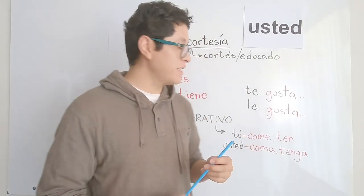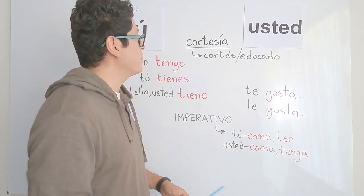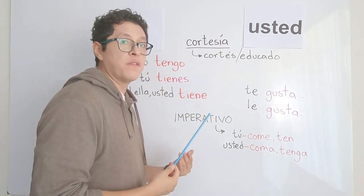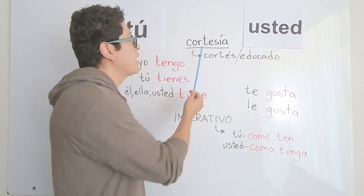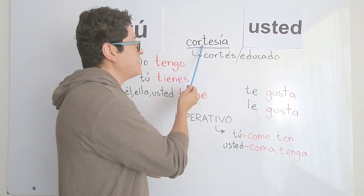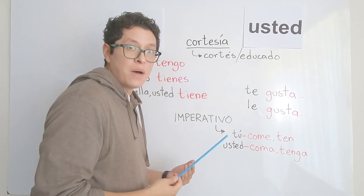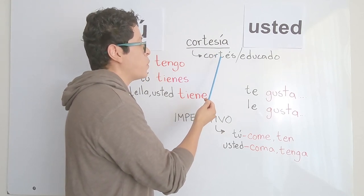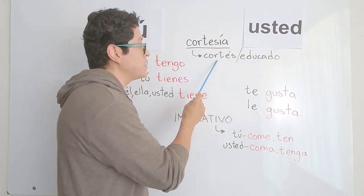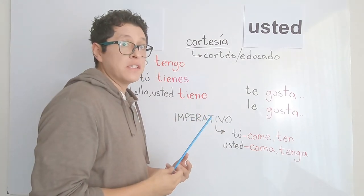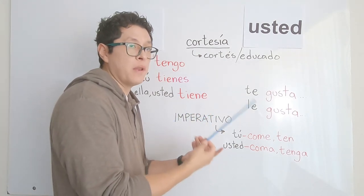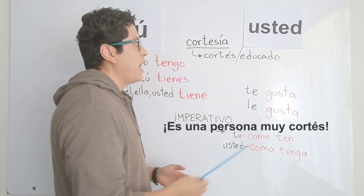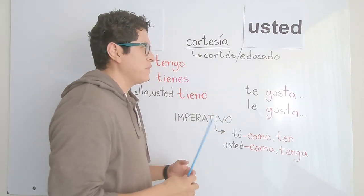The first thing I want to look at is the word cortesía. In Spanish we use this word to refer to politeness — cortesía. Esta palabra es un sustantivo, this is a noun. Below I added one adjective: cortés, which is the word for polite, as in 'es una persona muy cortés' — he is a very polite person. However, the word cortés is not widely used.